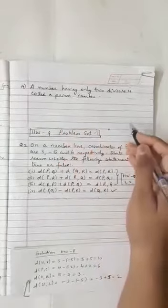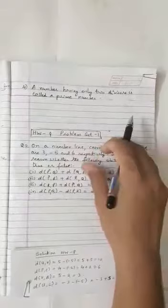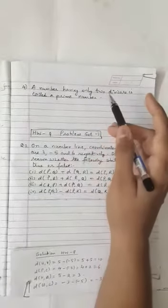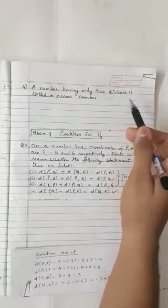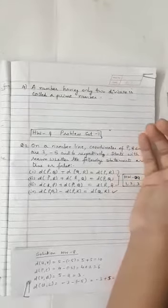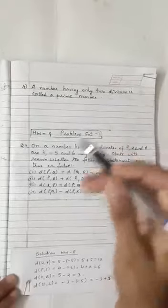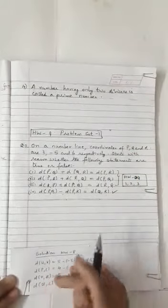Now as I said, what will the if part contain? The if part will contain the content about which we are talking. So we are talking about a number who is having two divisors. Then what will happen? That number we can call as a prime number.